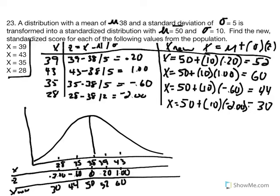We've taken an original distribution, converted scores into z-scores expressing their distance from the mean in standard deviation units, then created new labels using the new mean and standard deviation. The location of scores relative to the mean does not change — we've simply relabeled them by creating a new distribution of x values.